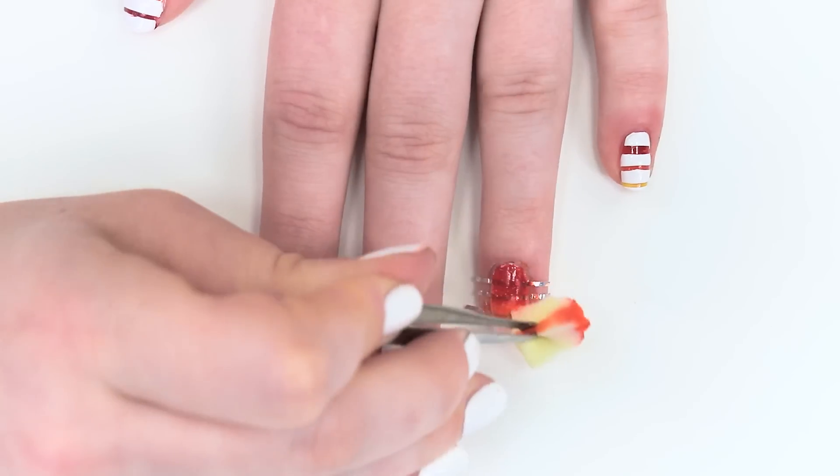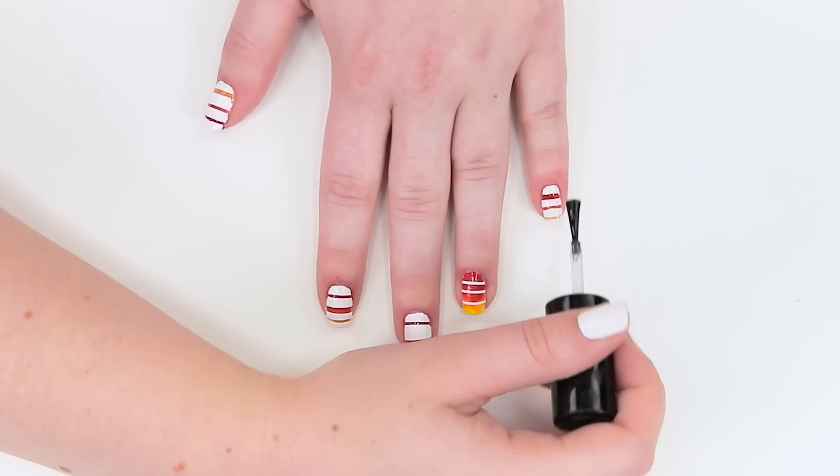Repeat the ombre sponging technique on your ring finger and finish with a top coat.